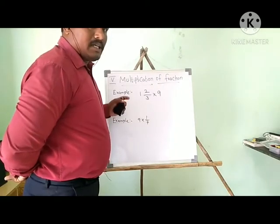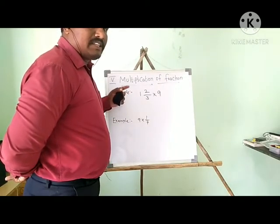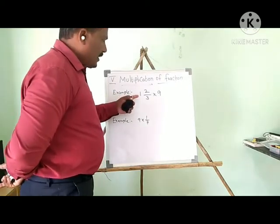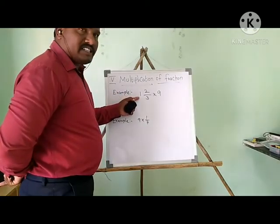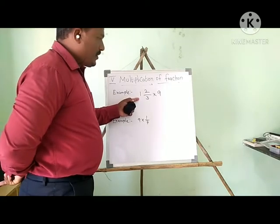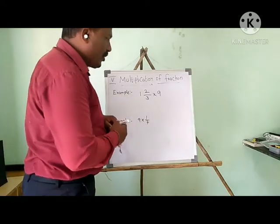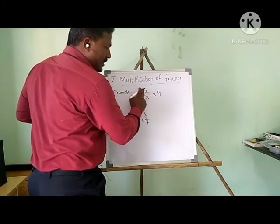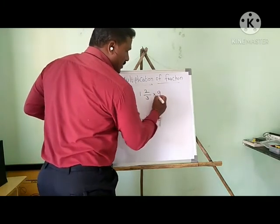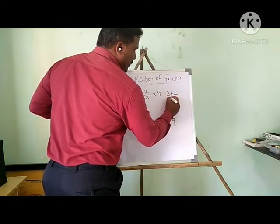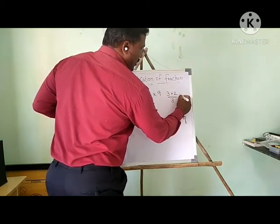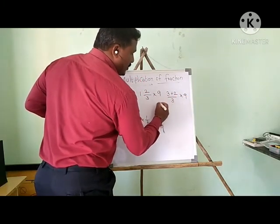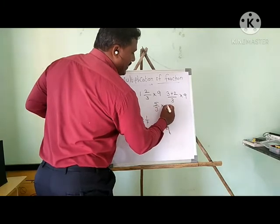Welcome students. Now I am going to show some other examples about multiplication of a fraction with a whole number. Which kind of fraction is this? It is a mixed fraction. If you multiply this kind of fraction, you have to cross multiply first. So 1 × 3 = 3, plus 2 gives us 3 + 2 upon 3, multiplied by 9. Adding gives 5/3 multiplied by 9.